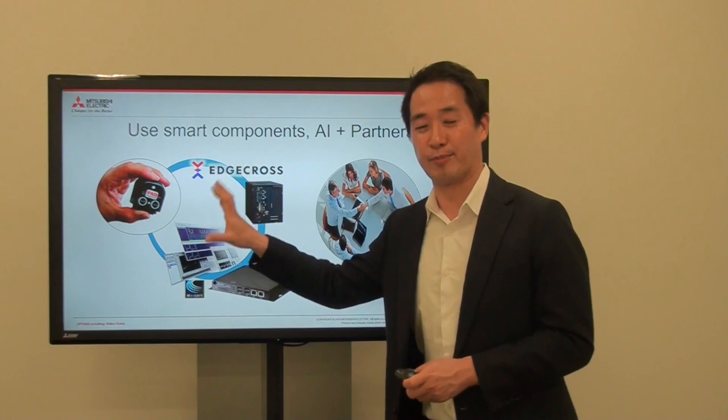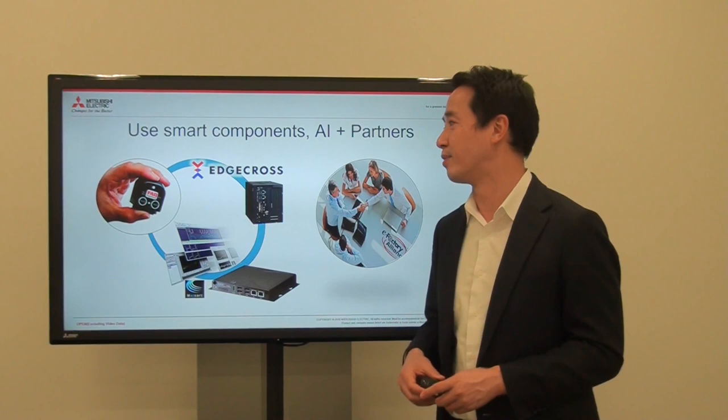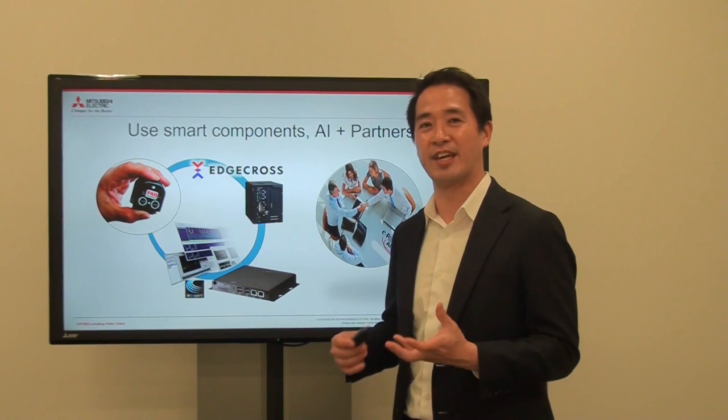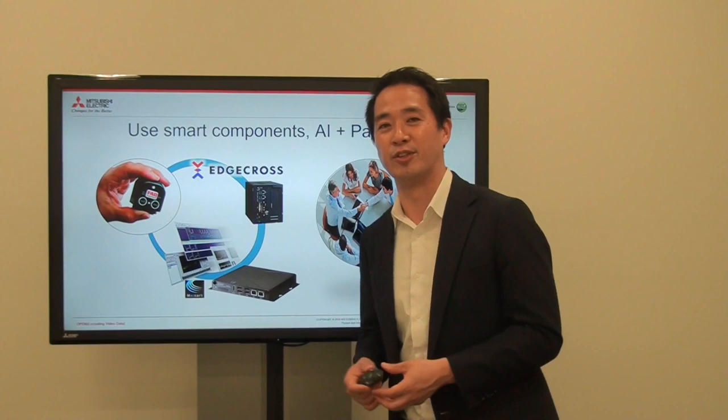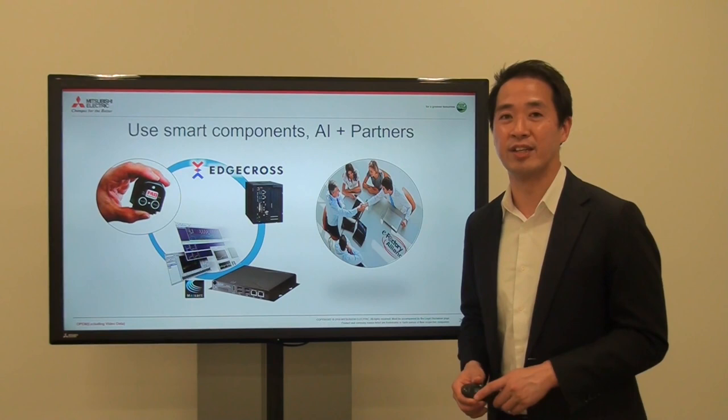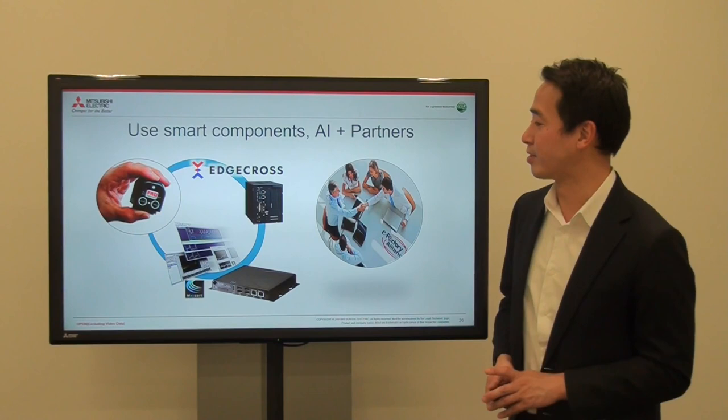Another good option is to use smart products — AI and data analytics that are embedded right into the product. For instance, we have a smart vibration sensor — you just stick it on a motor, monitor it for 10 minutes, and it finds out the characteristics of the motor. If something is altered or wrong, it will send out an alarm. It's very simple — you're not doing data analytics on your side; the sensor does it for you. So you don't even have to hire a data scientist in these cases. As Mitsubishi Electric, we're trying to implement this kind of easy embedded technology in our components.